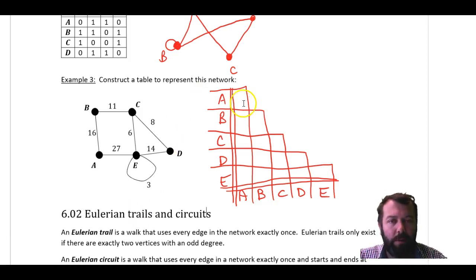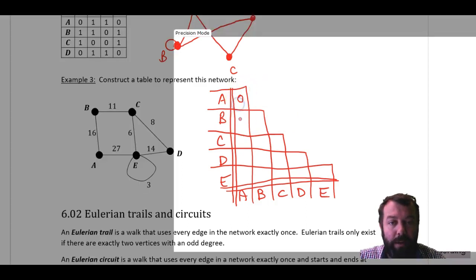Now, what I've done by drawing my table like this is I have removed the double ups that occurred in the other table. Because from A to B and B to A in an undirected network, a network that doesn't have arrows attached to the edges, A to B and B to A means the same thing. So I've just removed the duplicates. So let's start at A here. A has an edge going off to B and E, and that's all. So there's no loop at A. A to B is 16, has a weight of 16. There's nothing at C. There's nothing at D. And A to E is 27.